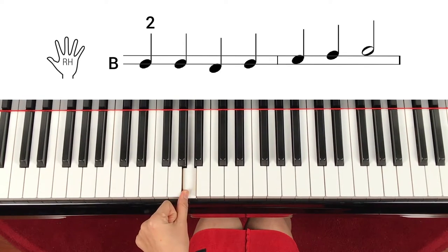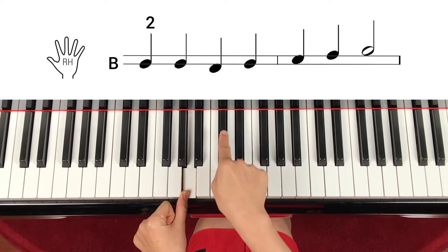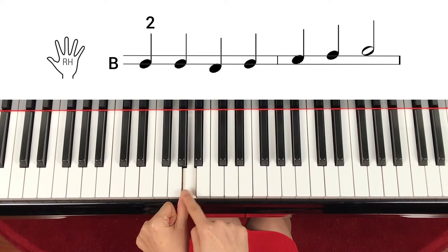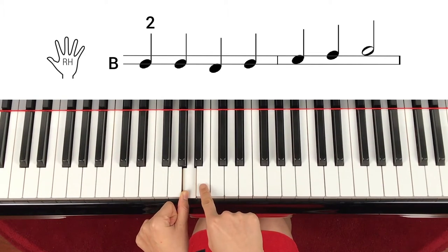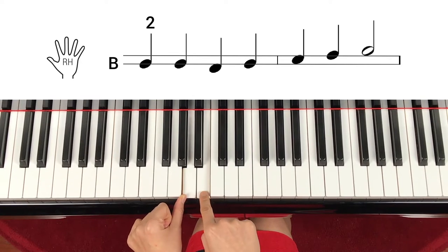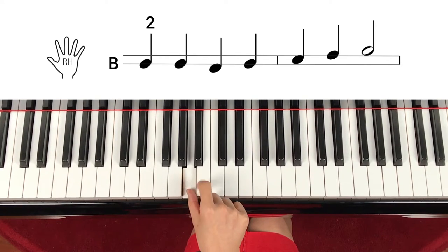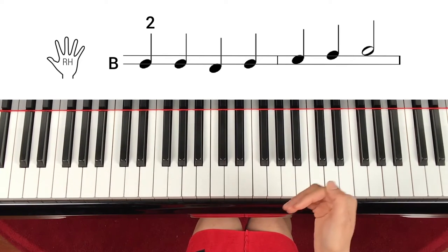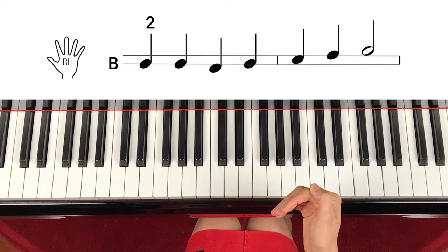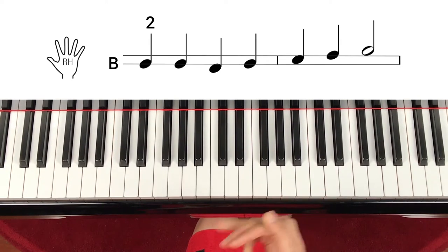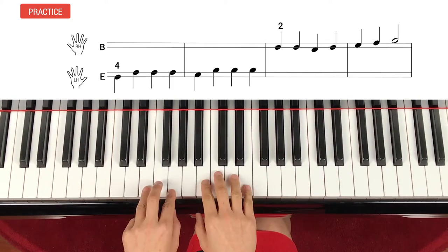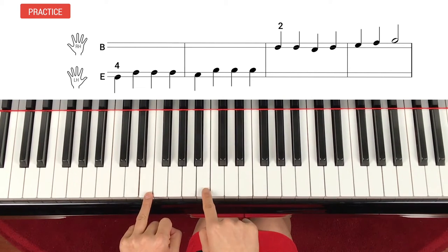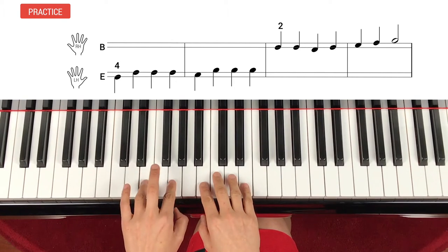And right hand is on B. So B, let's try middle C, step down B with the finger number two. So actually it's right next to each other. But it's different lines. B, B, and step down. That's how you read. Try not to calculate it or convert it to C, D, E, F, G, but just read as a graph. So put your hands on E with finger number four, right hand B on finger number two. Let's start.